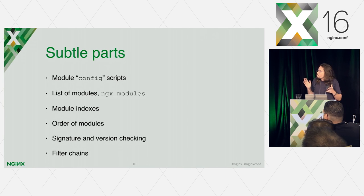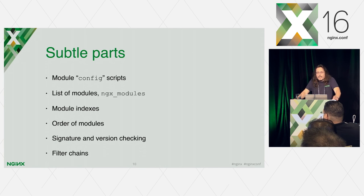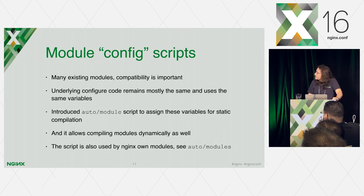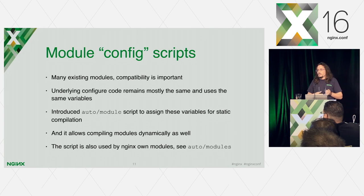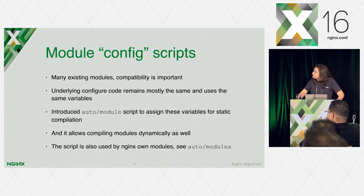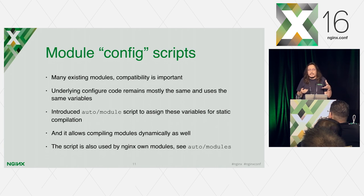Here is a list of some problems we were working on while implementing dynamic loading. Let's look at them in order. First of all, module config scripts — it's probably the most complex part of all the story, at least from an implementation point of view. There are many existing modules and compatibility is very important; we can't just break everything. So we have to provide compatibility with all modules as well. Essentially, module config scripts are shell code, and in config scripts modules just set some global variables.